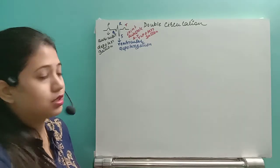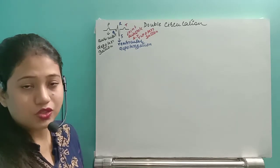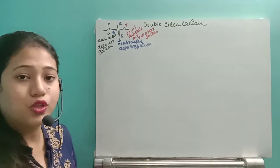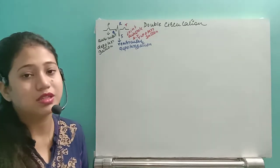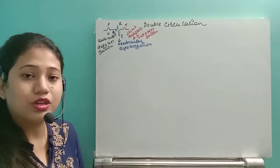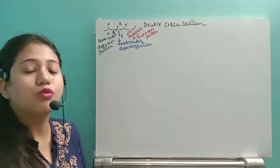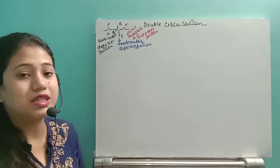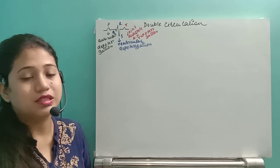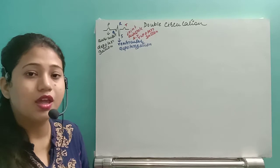Now let us move to the double circulation. In the case of fishes, blood enters the heart only once. In the case of humans, complete double circulation occurs. We need to understand this with respect to the human heart in detail. Double circulation is divided into two parts: the circulation of deoxygenated blood, and the circulation of oxygenated blood, called systemic circulation.